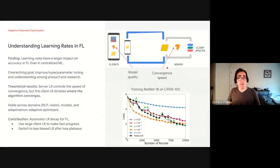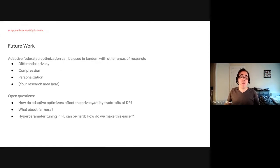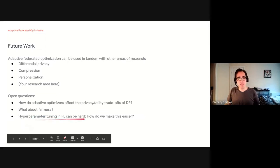I am running out of time, so I'm going to skip this next open area and just move on to the future work. I just want to highlight that adaptive federated optimization can be used in tandem with other areas of research such as differential privacy, compression, personalization, or your research area here. And some open questions are how do adaptive optimizers affect privacy and utility of differential privacy? How about fairness? Do they encourage fairness by allowing clients with unseen data or very infrequent data to make a lot of progress? And also hyperparameter tuning is really important. I didn't get a chance to talk about it, but it can be hard in federated learning. And so really we're interested in ways of making this easier.